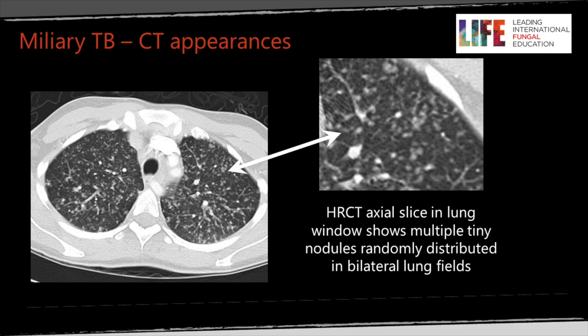Here's a good example of tuberculosis on CT — widespread nodules scattered through the lung, randomly through the tissues, some at the very edge of the lobes and some more centrally.